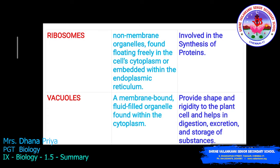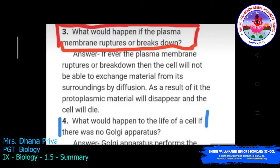These are all the cell organelles present in our chapter, fundamental unit of life. Now let us discuss some questions. What would happen if the plasma membrane ruptured or broke down? If the plasma membrane ruptures, the cell will not be able to exchange material from its surroundings by diffusion. As a result, protoplasmic material will disappear and the cell will die.